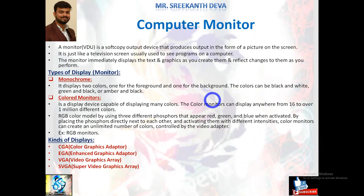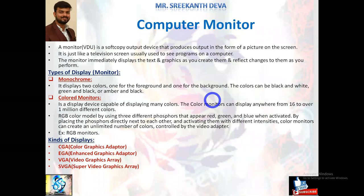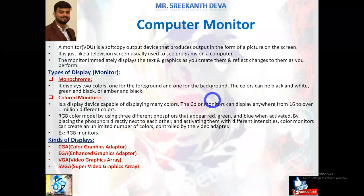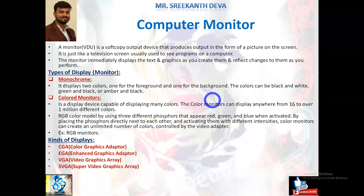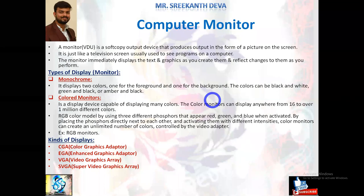A computer monitor, sometimes called a VDU (visual display unit), is a soft copy output device that produces output in the form of a picture on the screen. The data may be in the form of text, images, audio, or video. It is just like a television screen, used to see the results of programs on a computer. The monitor displays output information in what is called the output window.